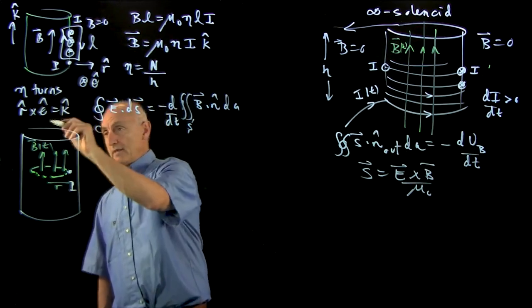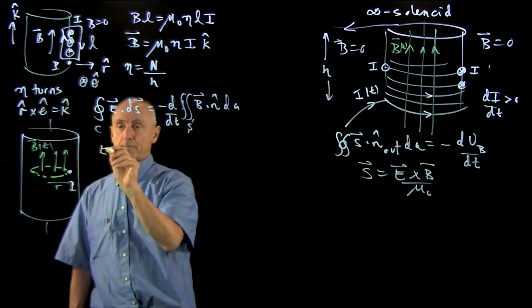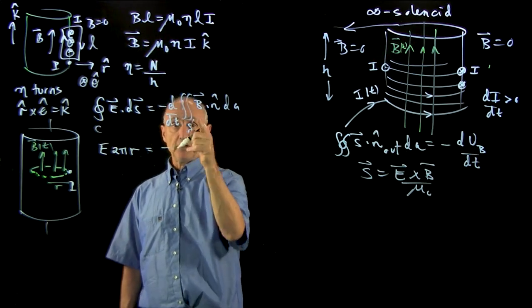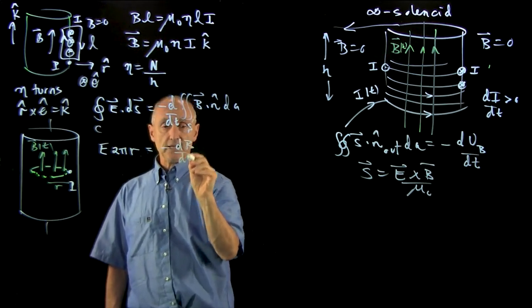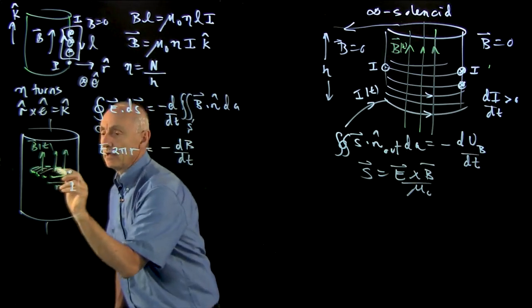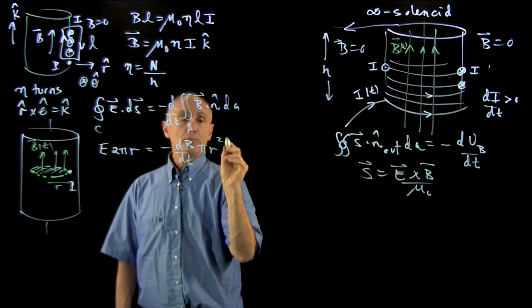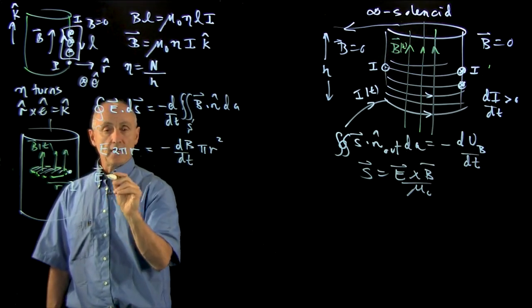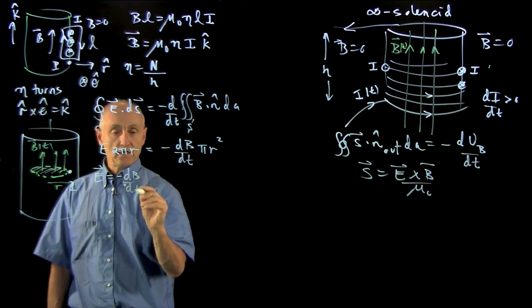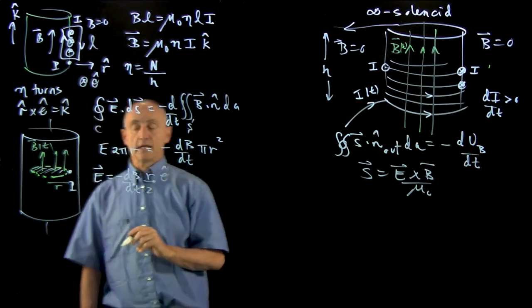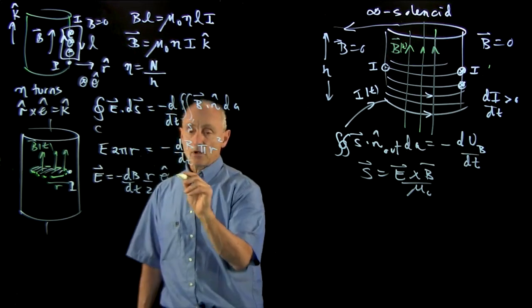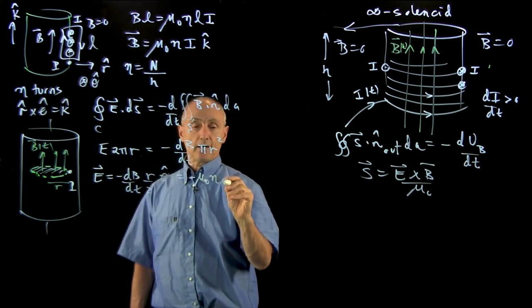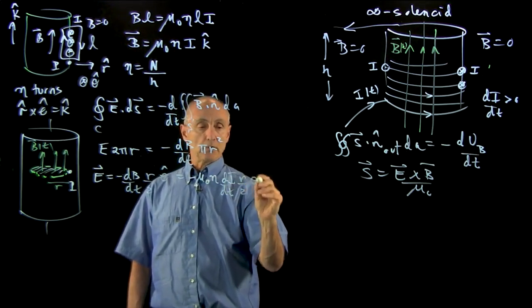By the symmetry, the axial symmetry of our solenoid, this is just E times 2 pi r. And here we have the minus change of the magnetic field, so we can write this as simply dB/dt times the area of our Faradayan loop. I get that my electric field, in this case, will be minus dB/dt r over 2 theta-hat. Now we can substitute in our result for B, so we get minus mu_0 n di/dt r over 2 theta-hat.